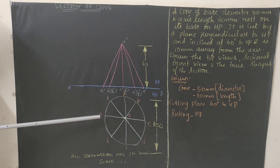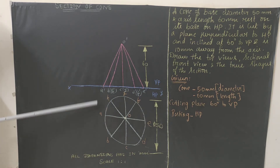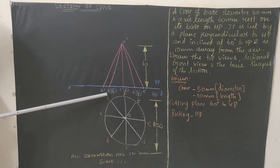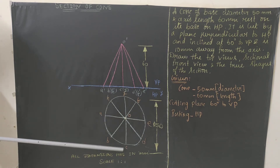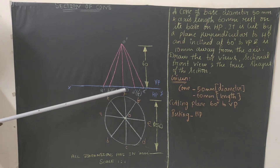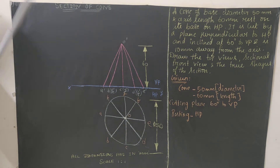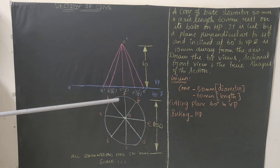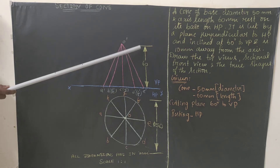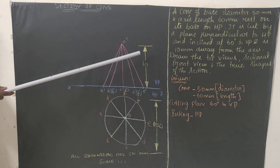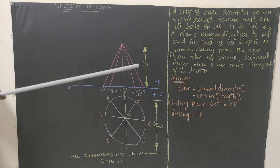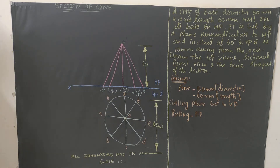Now name the front view points: when seen from the front you can see A, so mark A-dash; you can see B but not H, so B-dash (H-dash); C but not G, so C-dash (G-dash); D but not F, so D-dash (F-dash); and E, so E-dash. Extension lines should be with 2H pencil, dimensioning lines with H pencil, and the value 60 with HB pencil.